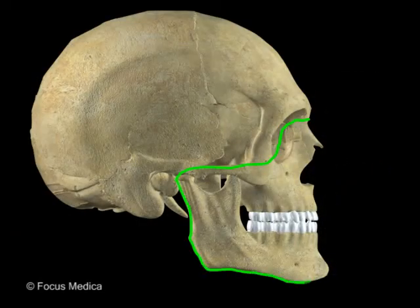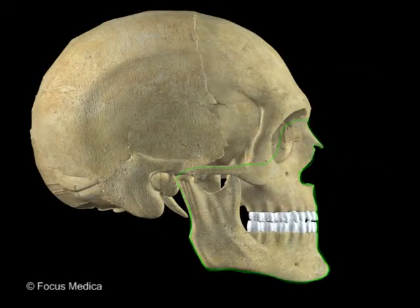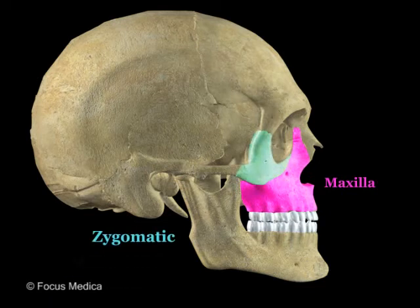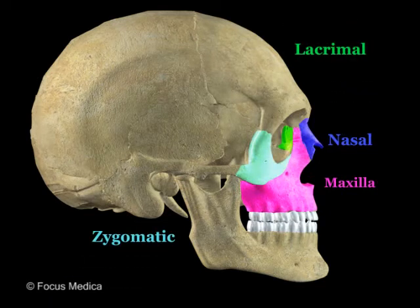The bones of the facial skeleton that are seen here are the maxilla, zygomatic, nasal, and the lacrimal bone.